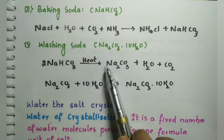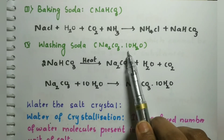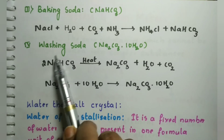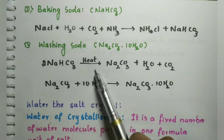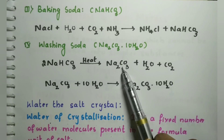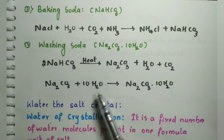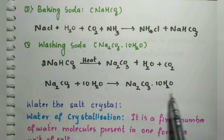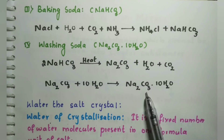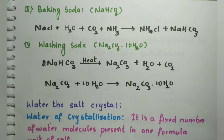Next we see washing soda, Na2CO3·10H2O. When baking soda (NaHCO3) is heated it gives Na2CO3, which is then combined with 10 molecules of water to form washing soda. Washing soda is used in soap-making industries, glass and paper industries, removal of water hardness, and preparation of borax.